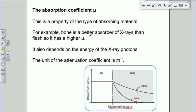So bone is a better absorber of x-rays, the decay is much quicker, and therefore it has a higher absorption coefficient. So something with a higher absorption coefficient, mu, means it's a better absorber of x-rays. It's not quite as simple as that, because it also depends on the energy of the incident x-ray photons. And we'll have a look at how that works in a minute.